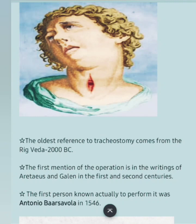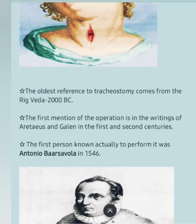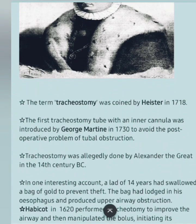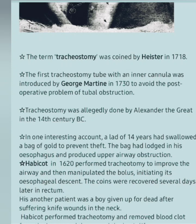Now let us see the history of tracheostomy. The first or oldest reference to tracheostomy comes from the Rig Veda, 2000 BC. The first mention of this operation in writings appears in the 1st and 2nd centuries. The first person known actually to perform it was Antonio Barsavola in 1546, and the term tracheostomy was coined by Heister in 1718.